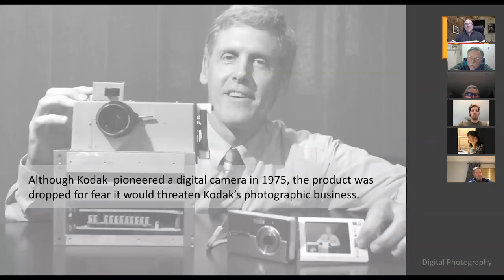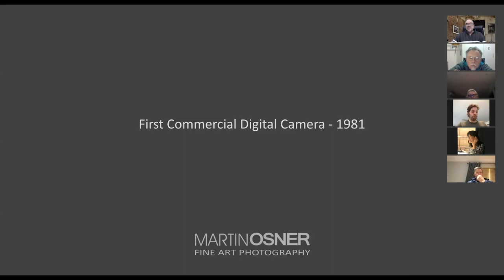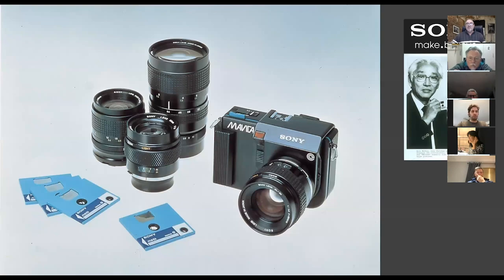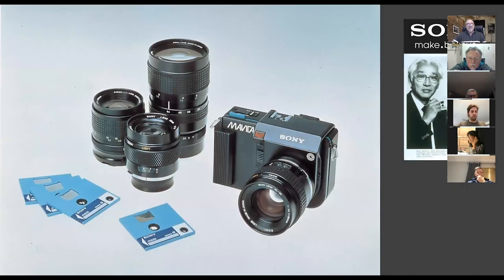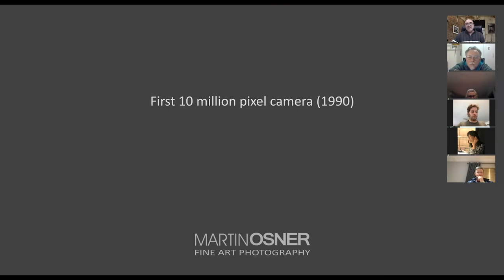Steve Sasson, who worked for Kodak at the time, created the first digital camera to record an image. But Kodak fell asleep on this — despite pioneering it back in 1975, they decided to shelve the project and keep it for a rainy day, believing they wouldn't need digital until absolutely necessary. What they didn't bargain on was industrial espionage, and the first commercial digital camera was launched in 1981 by Sony — called the Mavica — sold with floppy discs.